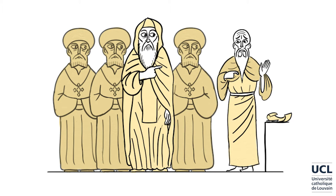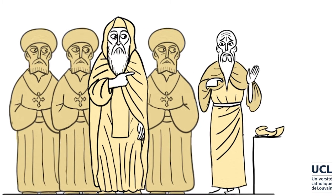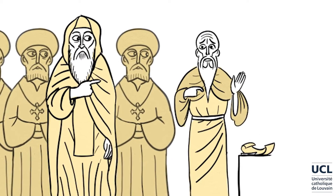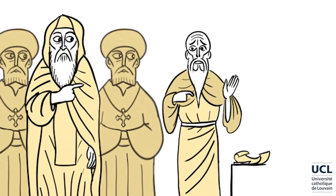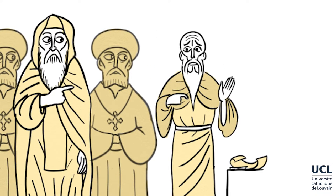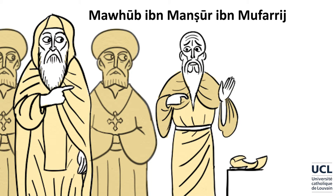Moreover, the person who was put in charge of composing this Arabic text was one of those members of the Coptic elite whom we mentioned earlier on, in Unit 3. He was closely connected to the Fatimid rulers, and at the same time actively involved in the life of his church and community. His name was Mahoub ibn Mansour ibn Mufarij, and he was a merchant, who was also involved in tax collection.